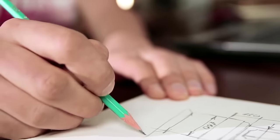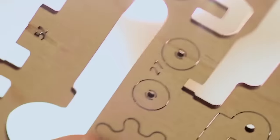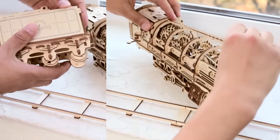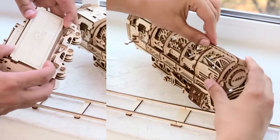We created the startup U-Gears in 2014 and realized the idea of modular mechanical models in which everything is real. Fully assembled, the models retain moving parts and elements.